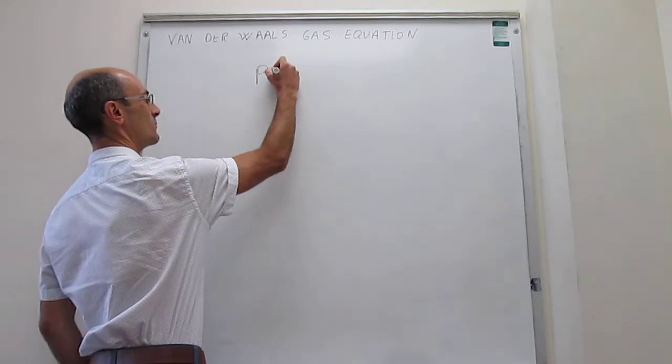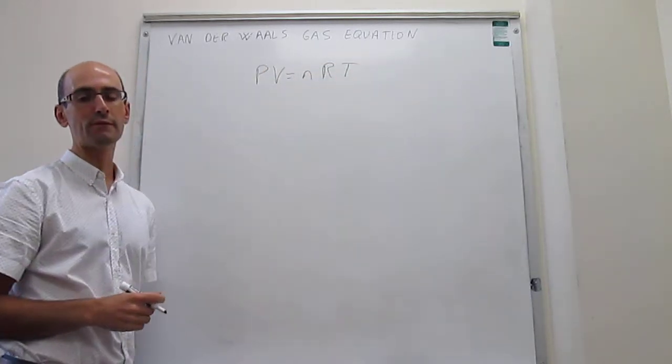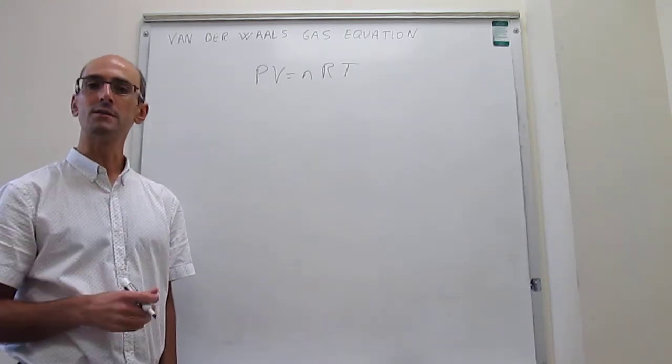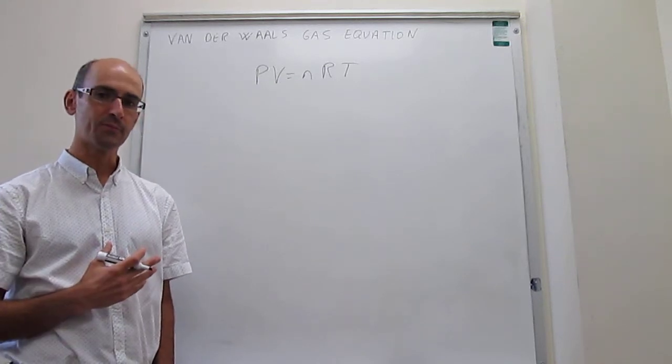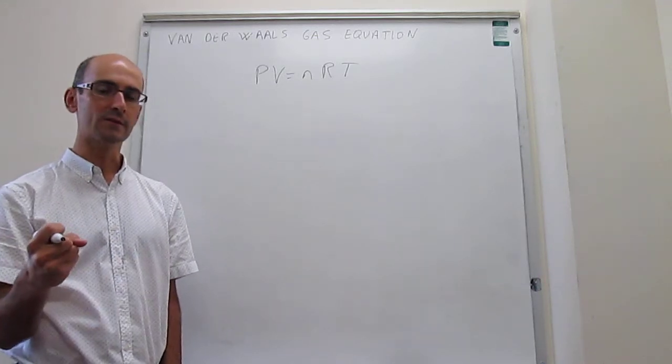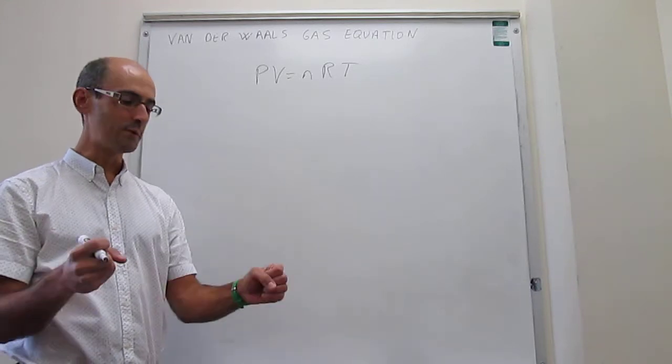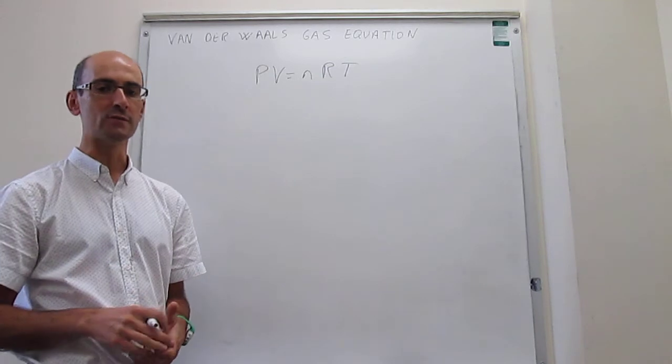The ideal gas equation of state works rather well, but it necessitates a couple of approximations. For one, when we think about the particles of the gas, these particles cannot interact with each other. And at the same time, it turns out that the volume of the particles, the size of the particles, has to be negligible compared to the separation between particles. Those are the two approximations.